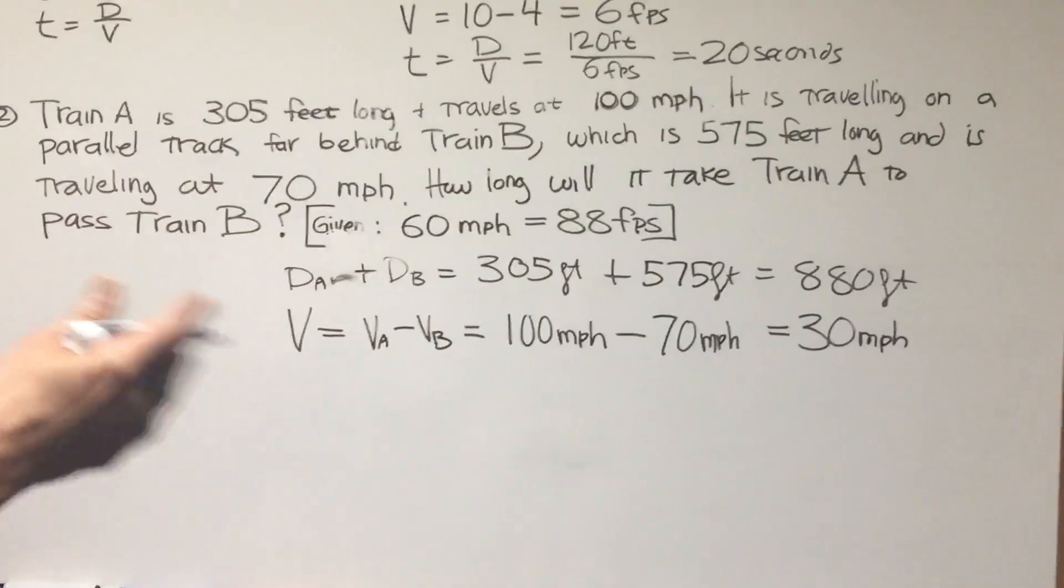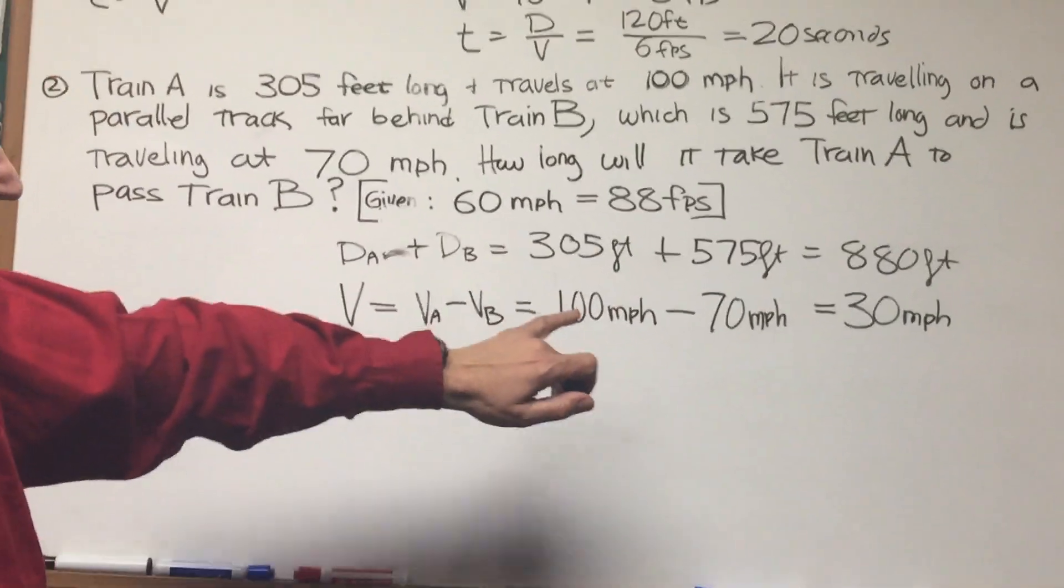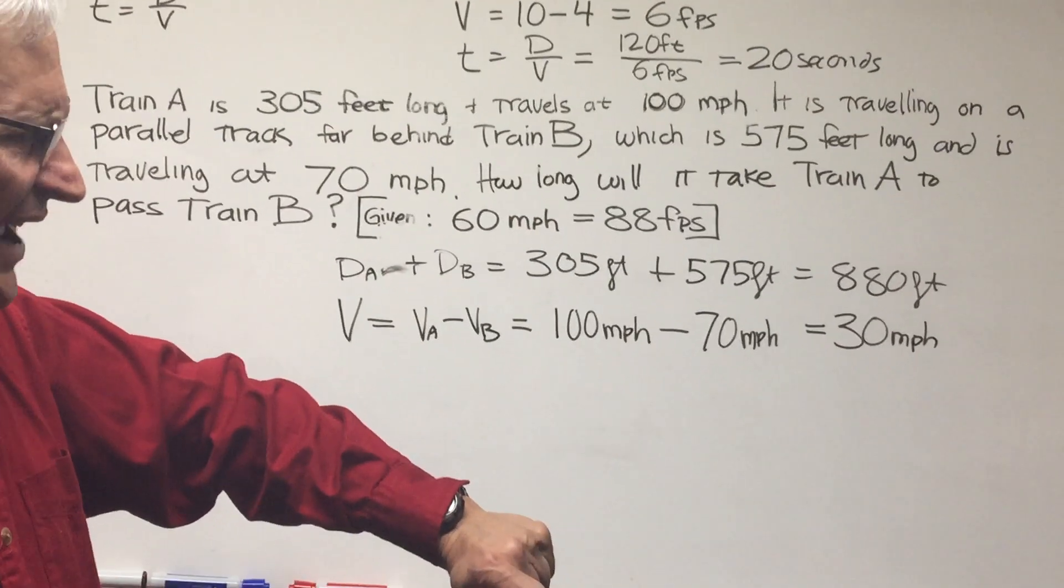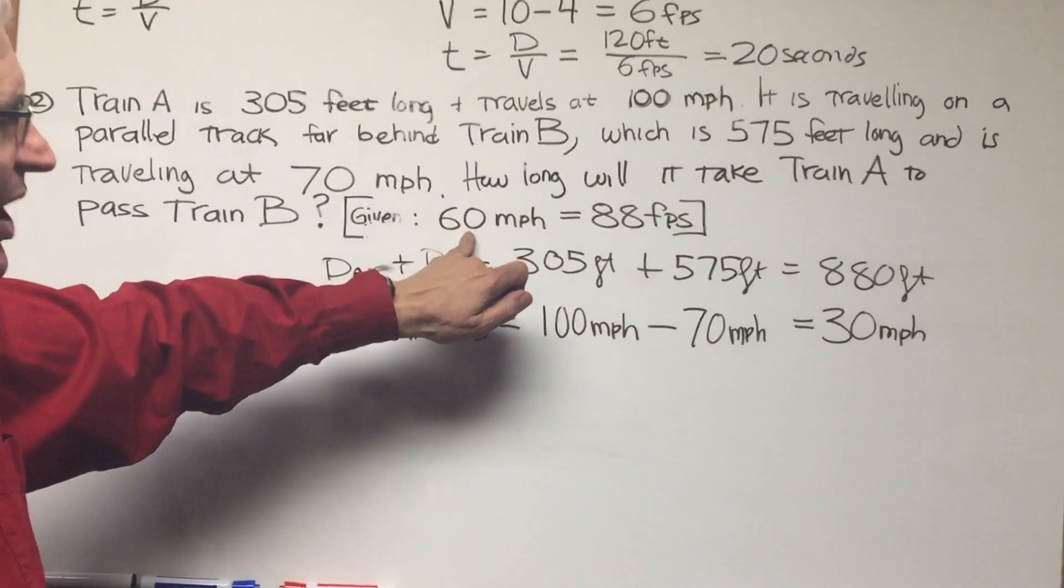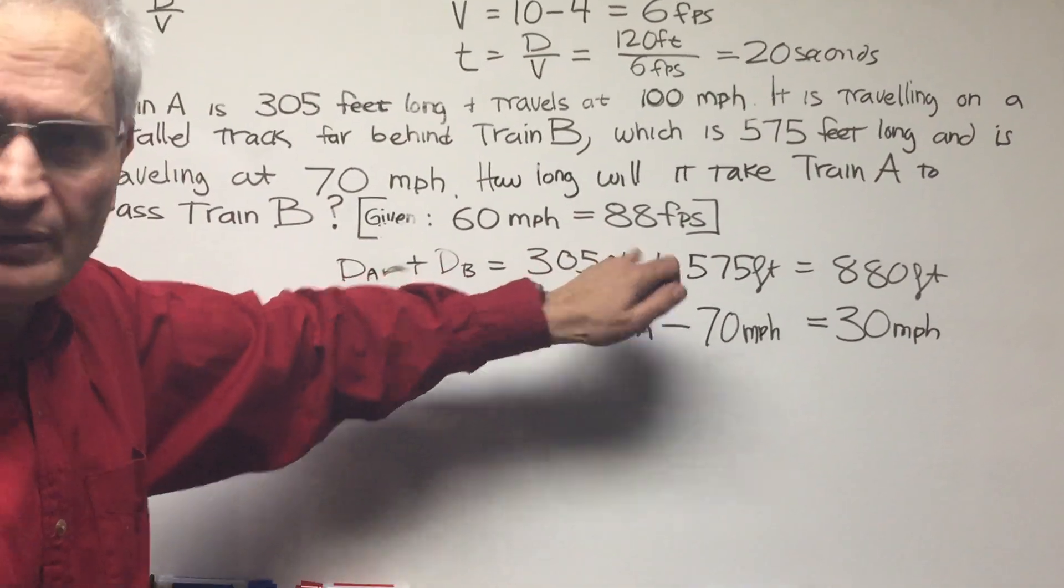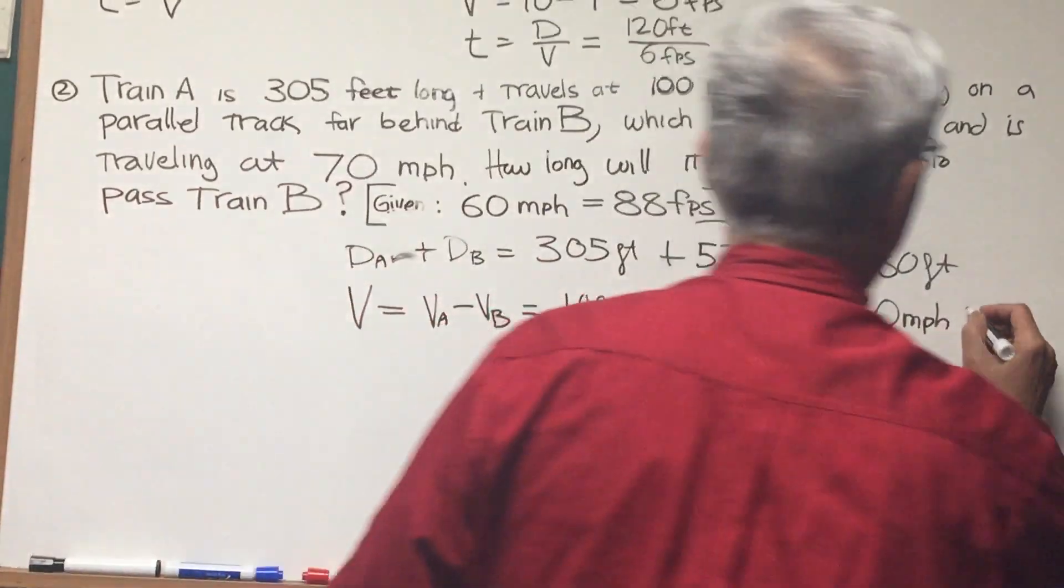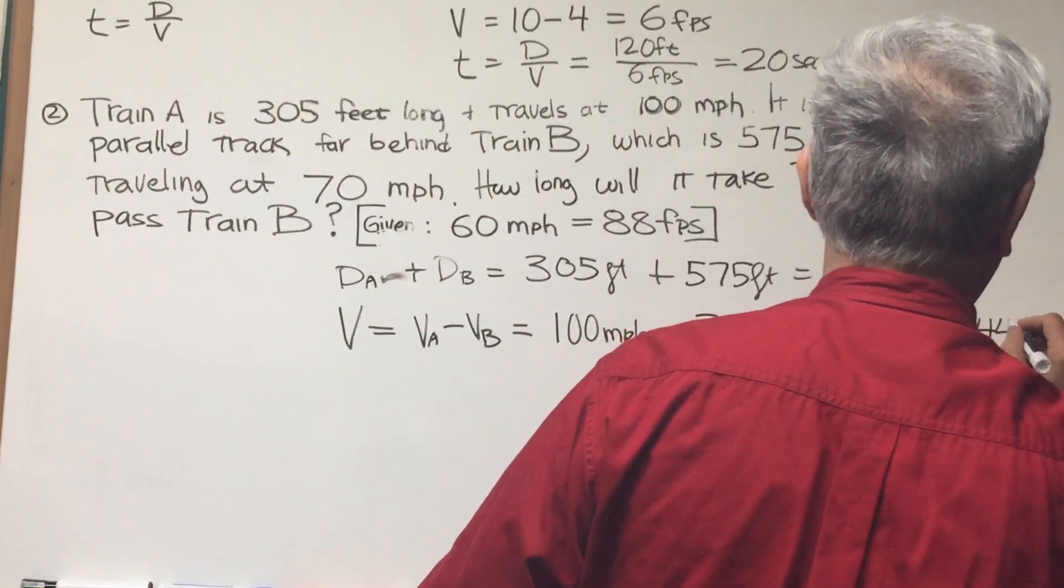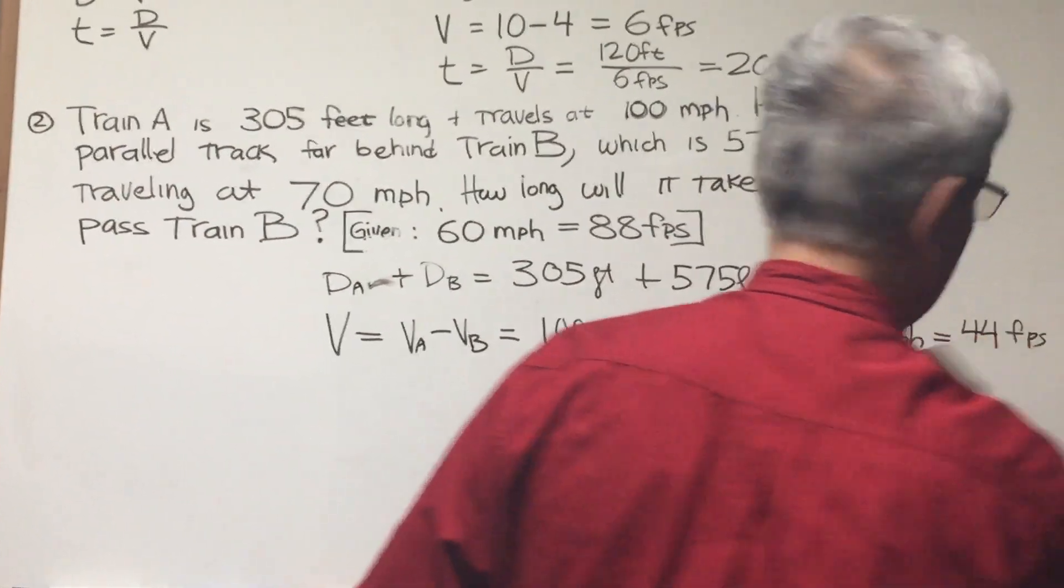Let's make this conversion right now. We've got 30 miles per hour. We know that 60 miles per hour is 88 feet per second. Let's just half that: 30 miles per hour is then 44 feet per second.